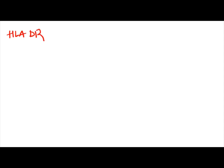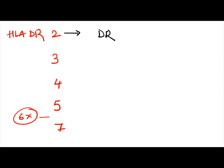Now we have HLA-DR subtypes: DR2, DR3, DR4, DR5, and DR7 — note that DR6 is not included. For HLA-DR2, remember the journey of a doctor becoming MS (Master of Surgery), so DR2 is associated with multiple sclerosis.